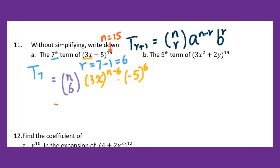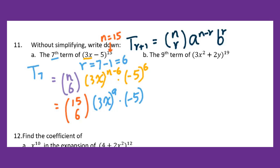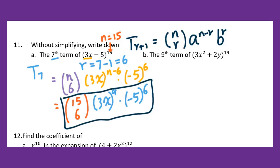Therefore, plug in and you will get 15 taken 6, then 3x to the 9th power — since 15 minus 6 is 9 — times negative 5 to the 6th power. You don't have to simplify, so this is the answer for part a.